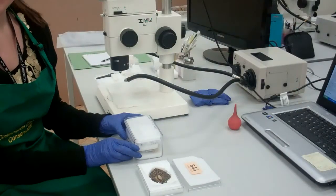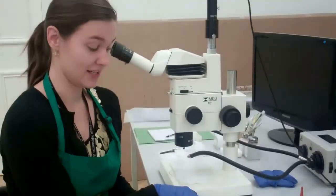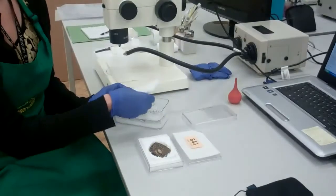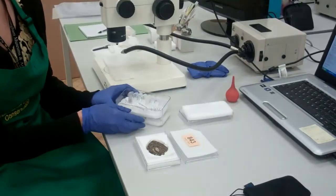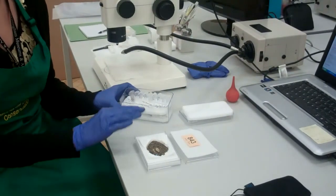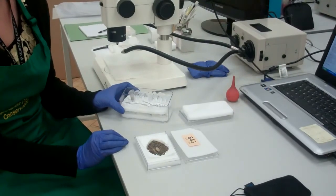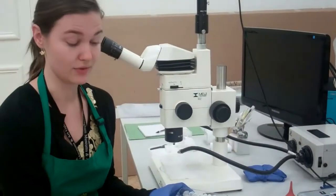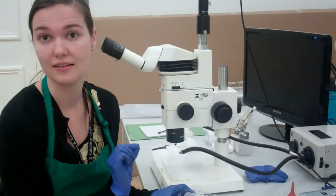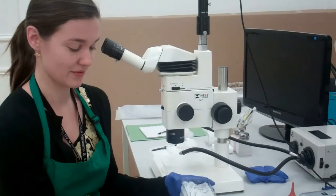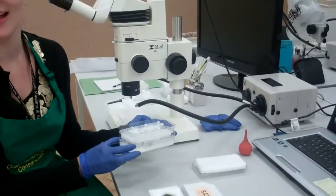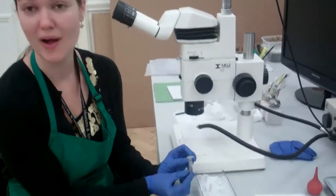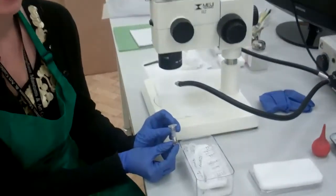One thing I wanted to point out before we take a closer look at the object is that we actually take a number of samples of everything that we remove from each object, and that includes the soil from the cells, and it also includes things like corrosion products, possible organic materials, and if we do happen to find any tiny garnet fragments in the soil. So all of those things are saved, and I've constructed this little housing so they don't rattle around. Just as an example, this is the soil from the bottom and the left cloisonné cells in the object.